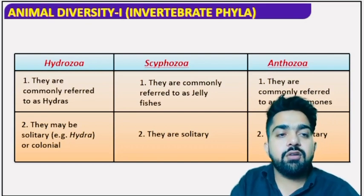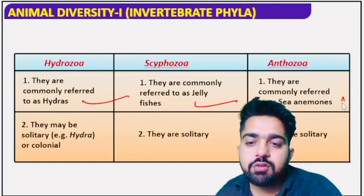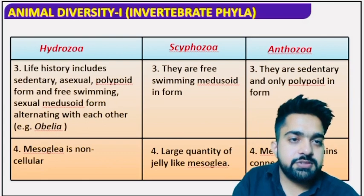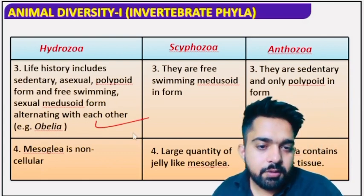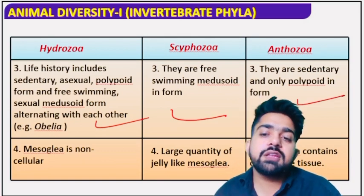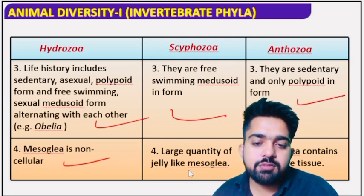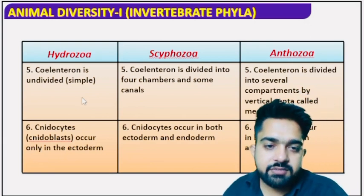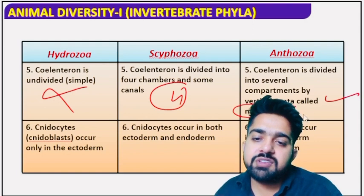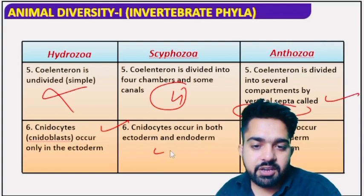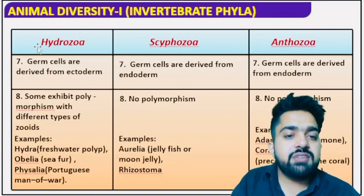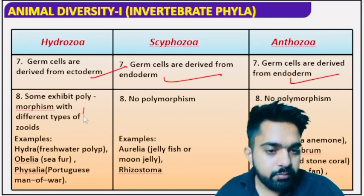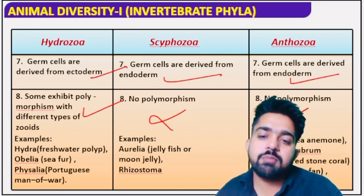There is a classification comparison chart: Hydrozoa are called hydroids, Scyphozoa are called jellyfish, and Anthozoa are called sea animals. Hydrozoa can be solitary or colonial; Scyphozoa and Anthozoa are solitary. Life history: Hydrozoa shows both polyp and medusoid forms; Scyphozoa mainly shows medusoid form; Anthozoa shows only polypoid form. Mesoglea: non-cellular in Hydrozoa, jelly-like in Scyphozoa, connective tissue in Anthozoa. Coelenteron: undivided in Hydrozoa, four chambers in Scyphozoa, multiple chambers in Anthozoa. Germ cells: ectodermal in Hydrozoa, endodermal in Scyphozoa and Anthozoa. Polymorphism is shown in Hydrozoa as zooids; not present in Scyphozoa or Anthozoa.